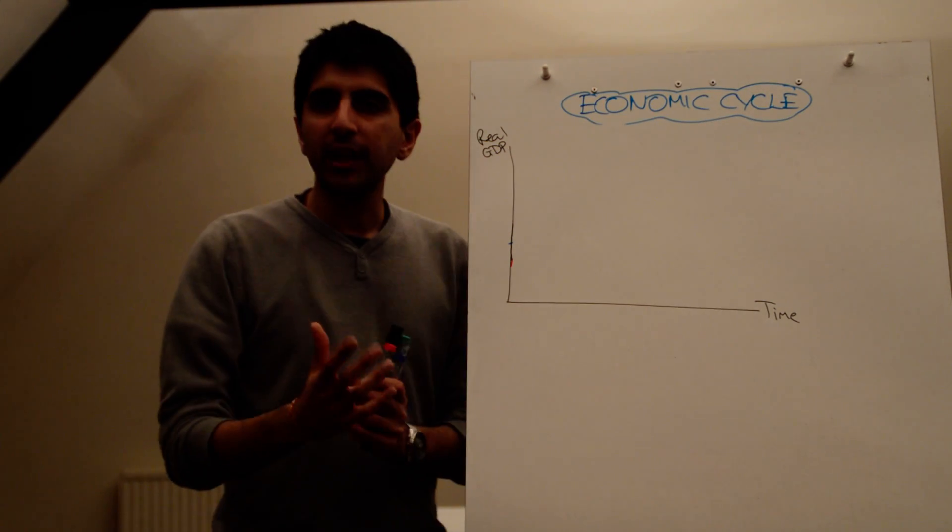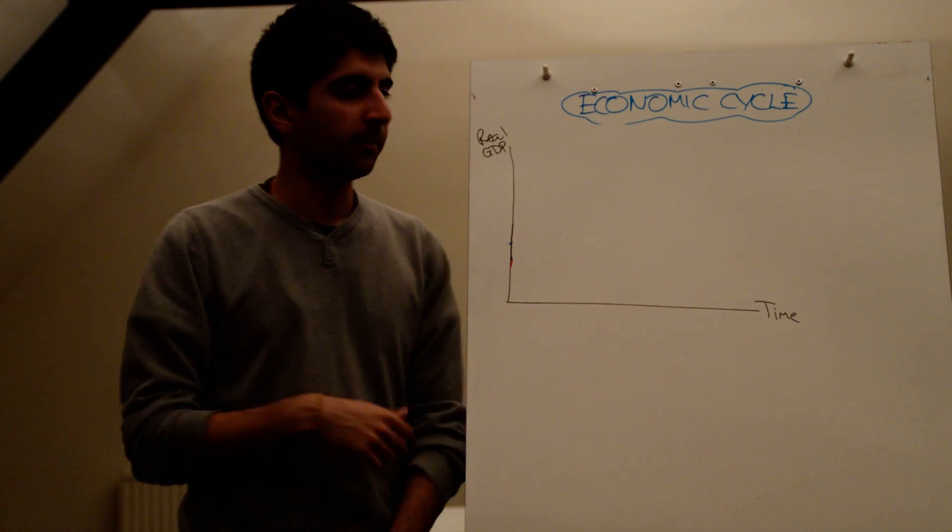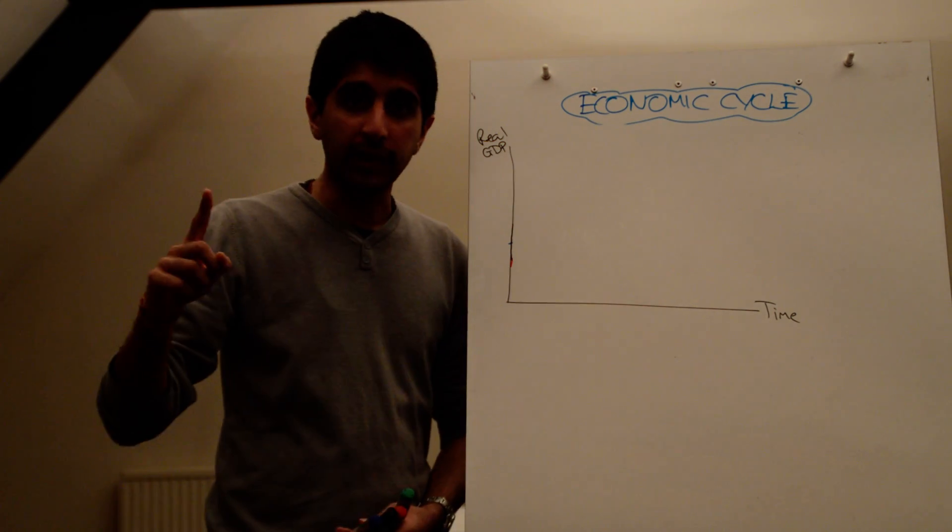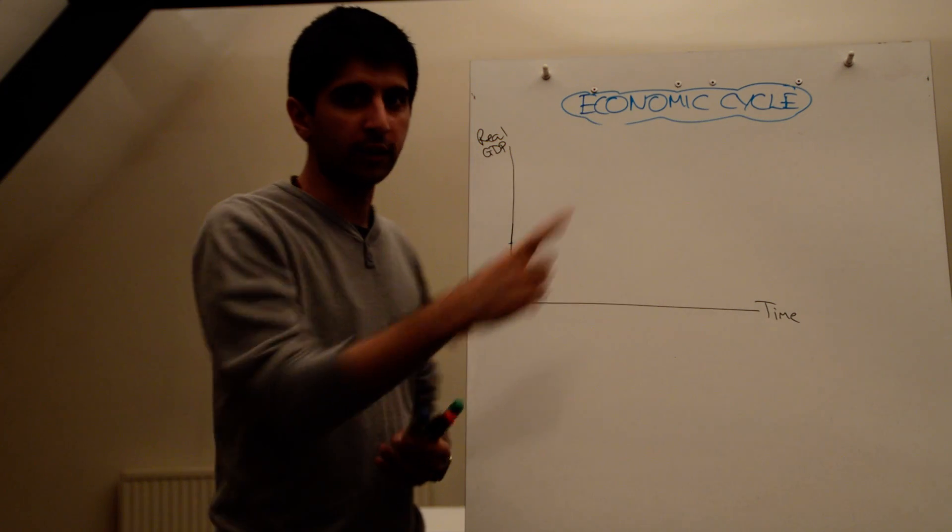Unfortunately for governments, their objective of strong, sustained growth is never really met in the long term, because growth is never really sustained. Growth fluctuates. The economic cycle tells us why it fluctuates and what it looks like.